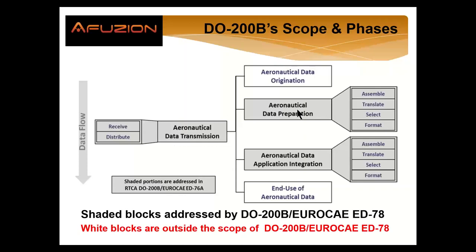It's how we prepare the data, including how we assemble it from the originator. We translate, select which data we're going to use and the format of that data. Then we consider how the data will be used — the application, how we integrate. Assembly, translation, selection, format. Then we have an end user. The shaded dark gray portion is DO200B. The origination and end use is external.